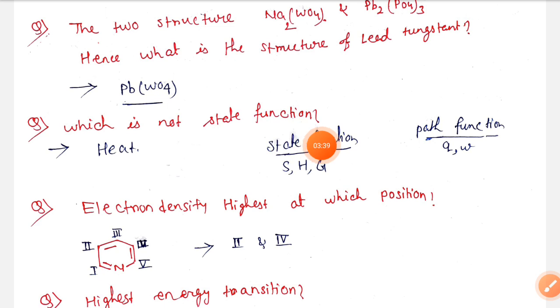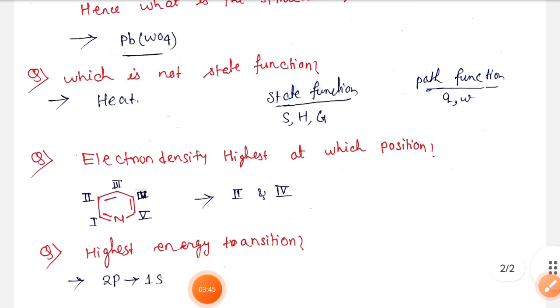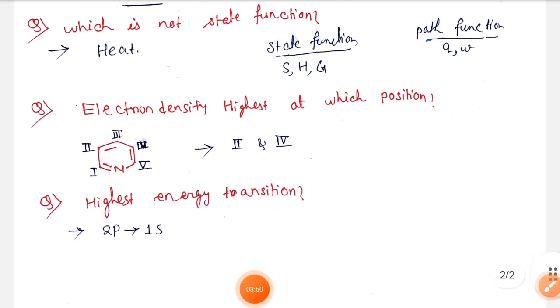Which is not state function? That is heat. We know that path functions are q and w, and state functions are enthalpy, Gibbs free energy, entropy, etc. Next, electron density highest at which position? In this case the compound is pyridine.